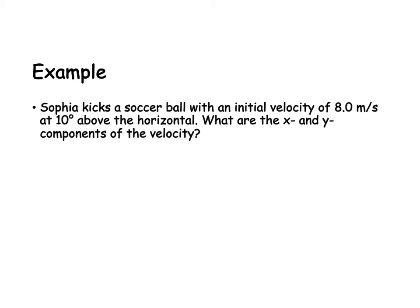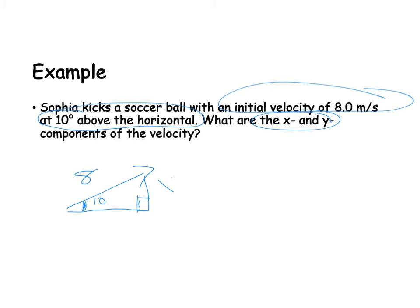Alright, so here's an example. Sophia kicks a soccer ball with an initial velocity of 8 meters per second at 10 degrees above the horizontal. What are our x and y components? Okay, so initial velocity is 8, and then our angle with the horizontal is about 10. So if I went ahead and completed it and made it a right triangle, I want to figure out my y and my x.